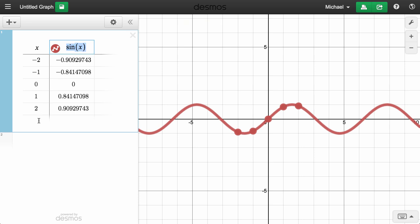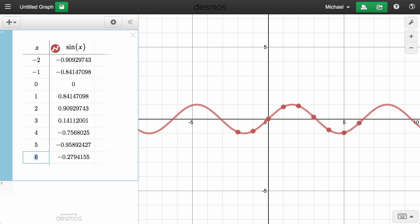To extend the table, click below the last row and type a new x value. To continue advancing, you can press the down arrow on the keyboard. You can also press Enter to continue a linear pattern.